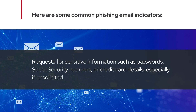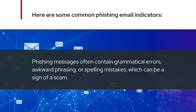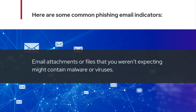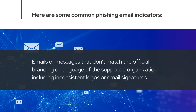Requests for sensitive information such as passwords, social security numbers, or credit card details, especially if unsolicited. Phishing messages often contain grammatical errors, awkward phrasing, or spelling mistakes, which can be a sign of a scam. Email attachments or files that you weren't expecting might contain malware or viruses. Emails or messages that don't match the official branding or language of the supposed organization, including inconsistent logos or email signatures.